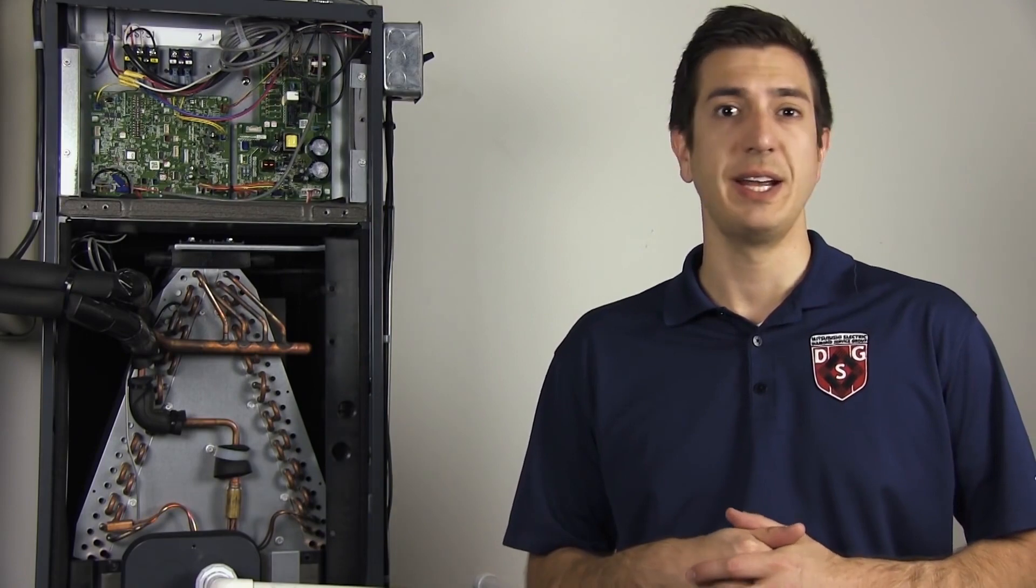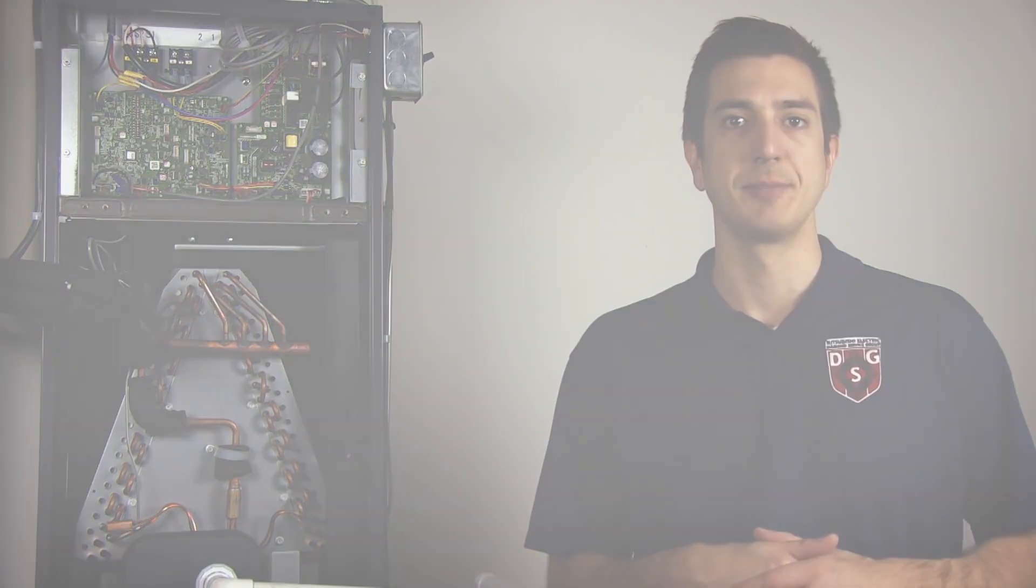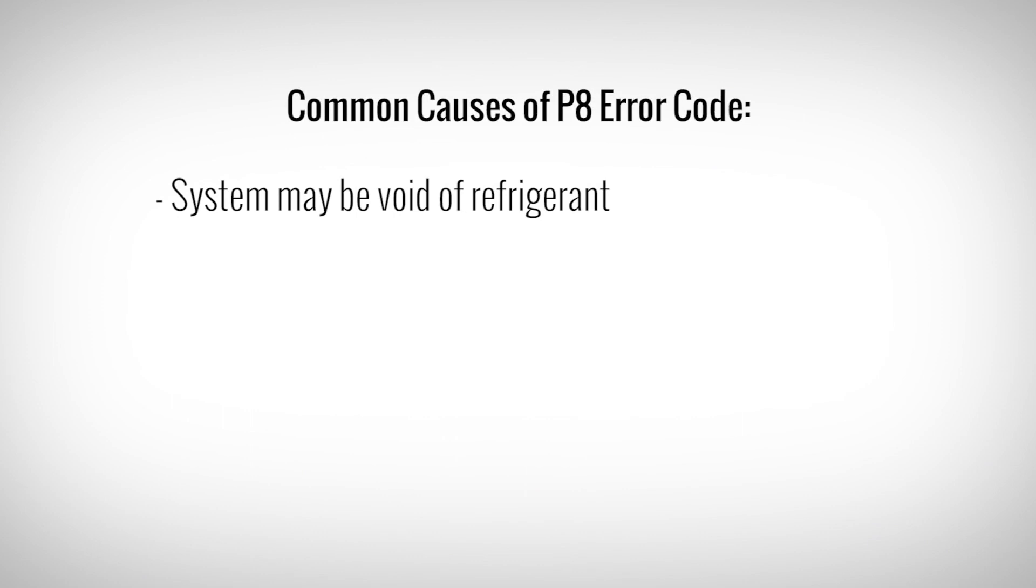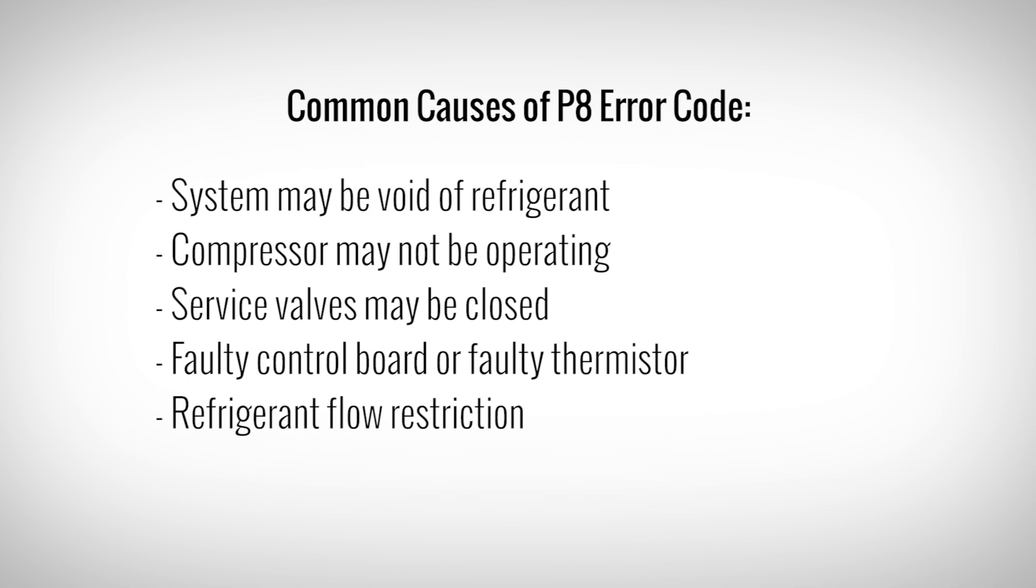Now that we understand what a P8 means, let's take a look at some common reasons for why it may happen. The system may be void of refrigerant. The compressor may not be operating. The service valves may be closed. Bad boards or bad thermistors. Or there may be a restriction causing refrigerant to not flow into the evaporator coil.